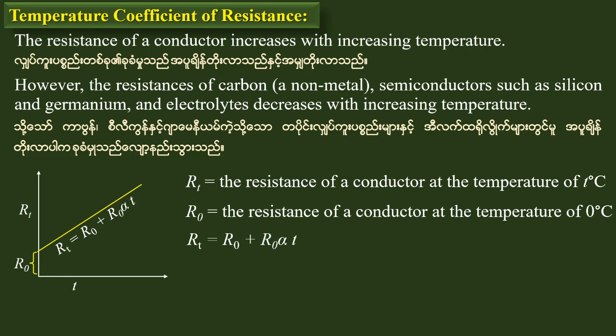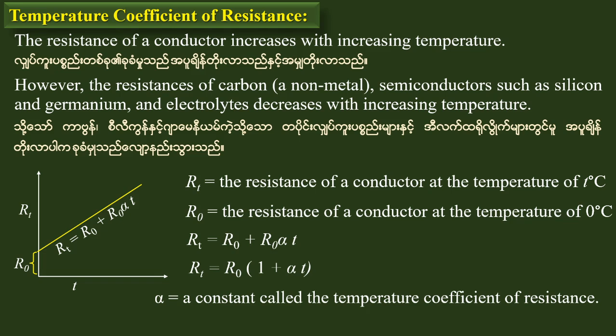This has to be a straight line equation: Rt is equal to R0 plus R0·α·t. Therefore Rt is equal to R0 into 1 plus α·t. Alpha is a constant called the temperature coefficient of resistance.